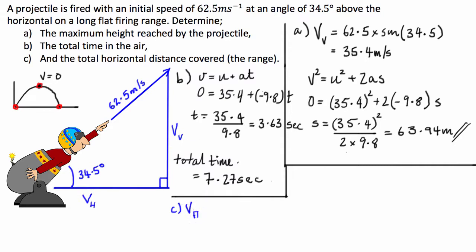So VH is equal to 62.5 times the cosine of 34.5. In an exam, you're trying to save as much time as humanly possible. So we can do this in one step, and I don't think it's too much trouble doing it in one step. So this here is our velocity in the horizontal direction.